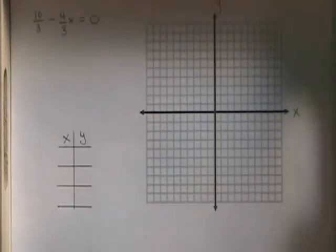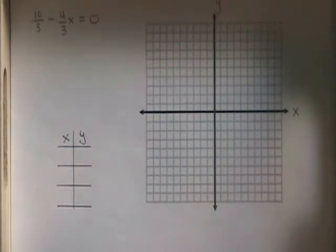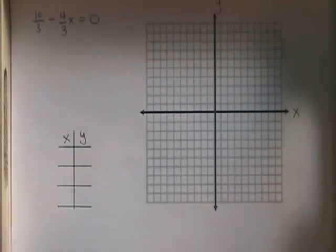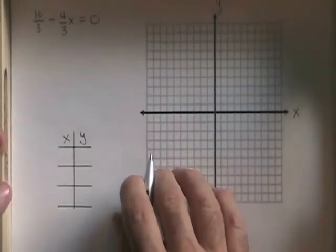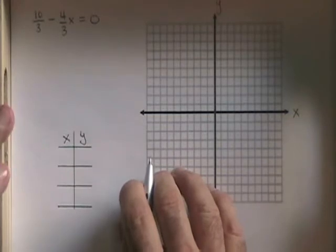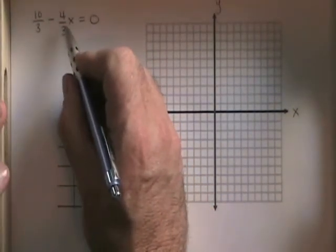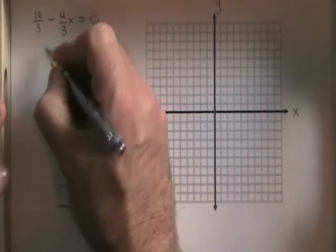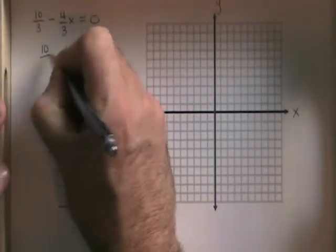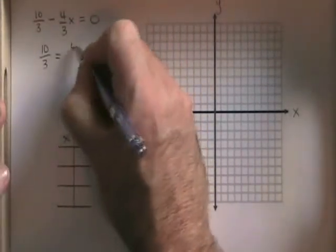Graphing a vertical line works the same way as graphing a horizontal line, except this time my equation has only an x and no y's. I'm going to start the same way by isolating the x. I'm going to move the negative four thirds x to the other side, and I get 10 thirds equals four thirds x.